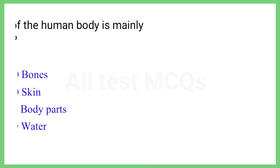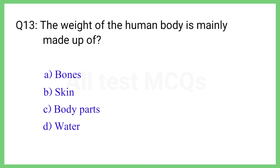Question No. 13. The weight of the human body is mainly made up of? The correct answer is Option D: Water.